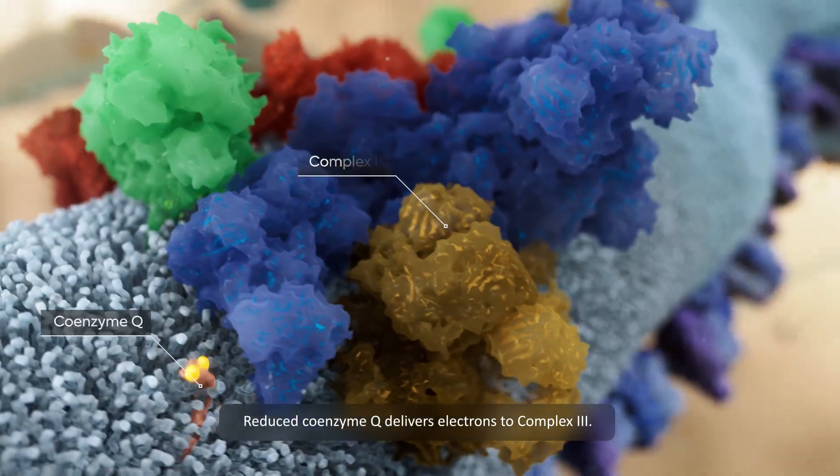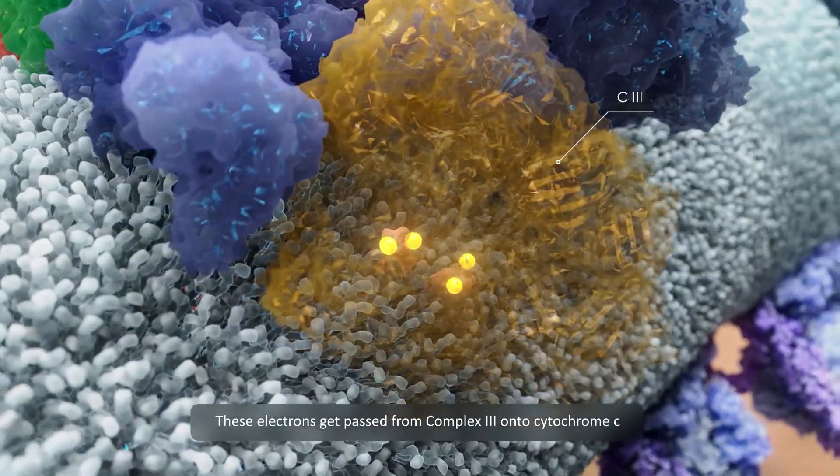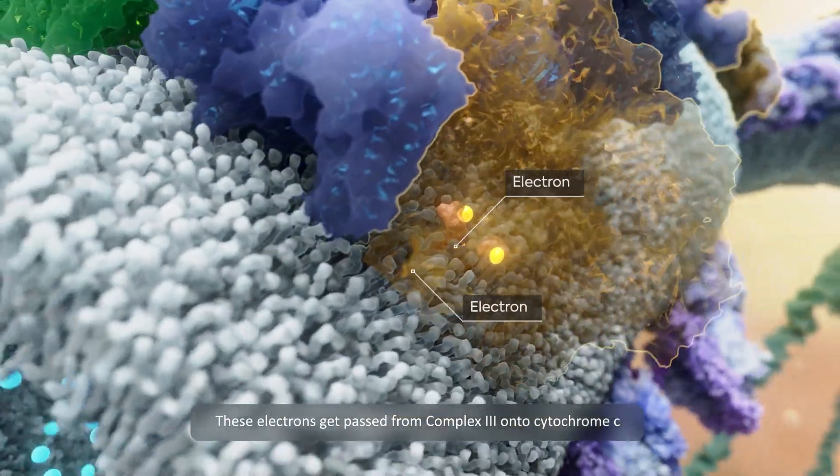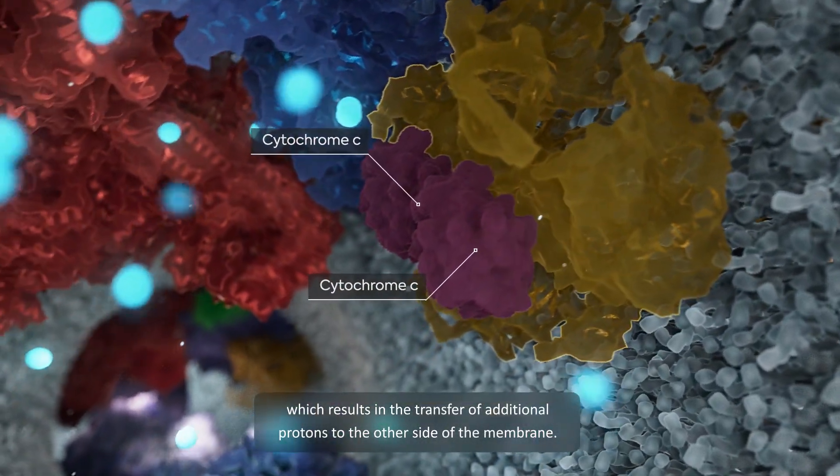Reduced coenzyme Q delivers electrons to complex 3. These electrons get passed from complex 3 onto cytochrome C, which results in the transfer of additional protons to the other side of the membrane.